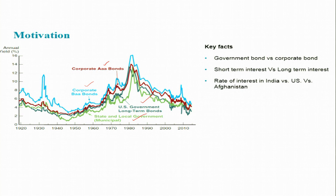Some key differences visible in this figure: for example, comparing government bonds and corporate bonds, the corporate bond rate of interest is greater than the government bond. Within corporate bonds, the double-A bond rate of interest is less than corporate BAA bonds. Similarly, for short-term vs. long-term US government bonds, the short-term interest rate is less than the long-term interest rate.